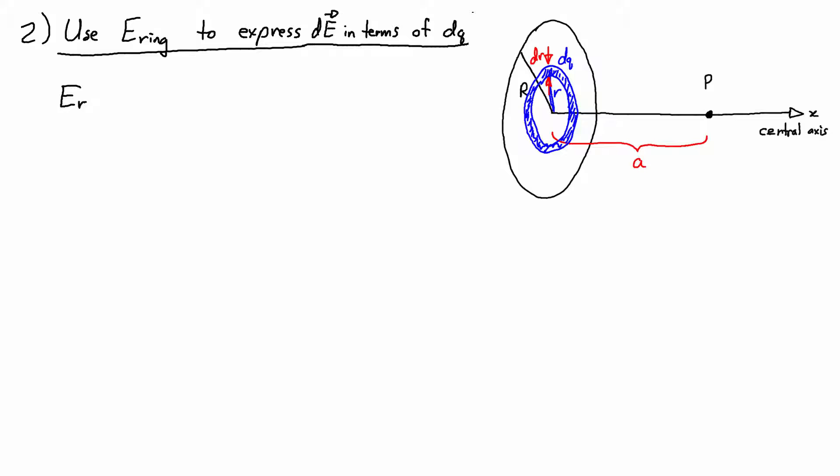The expression for the electric field of the ring is equal to k times q, which is the charge on the ring, times a, which is the distance from the center of the ring to point p on the central axis, divided by r squared plus a squared, where capital R is the radius of the ring, all to the power of 3 over 2.